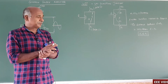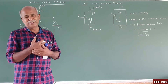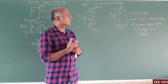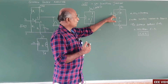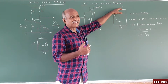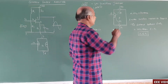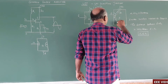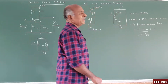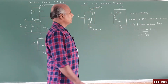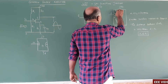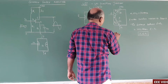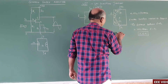The resistance between emitter and base-2 is R-B2, and the resistance between emitter and base-1 is R-B1. Since the distance to base-1 is greater, R-B1 is greater than R-B2, because resistance is directly proportional to length.